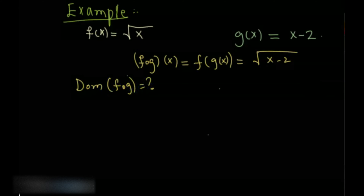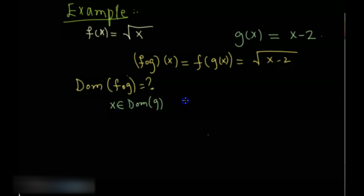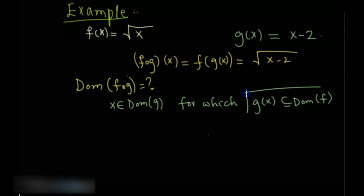If you recall the definition, the domain of f∘g is all elements x from the domain of the inner function g, for which g(x) is in the domain of f. This condition is crucial — we need all values of g(x) which are in the domain of f.